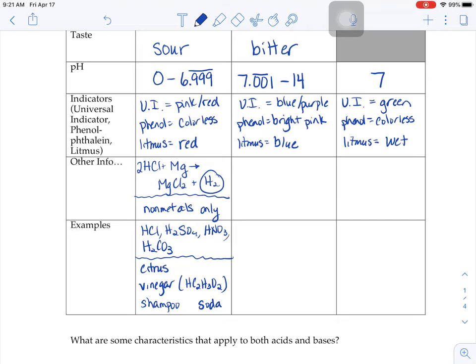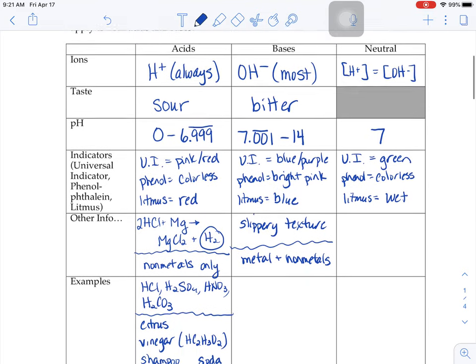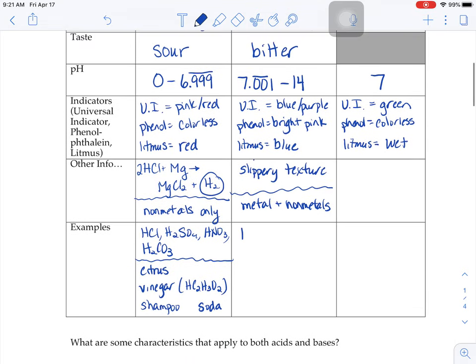Some characteristics about bases: they tend to have a slippery texture to them. And unlike those acids, they're made up of a combination of metals with nonmetals. So we said up above that bases often have that OH- ion in them. So a lot of times when you're titrating, for example, we use sodium hydroxide or potassium hydroxide, maybe barium hydroxide. That's just some examples.